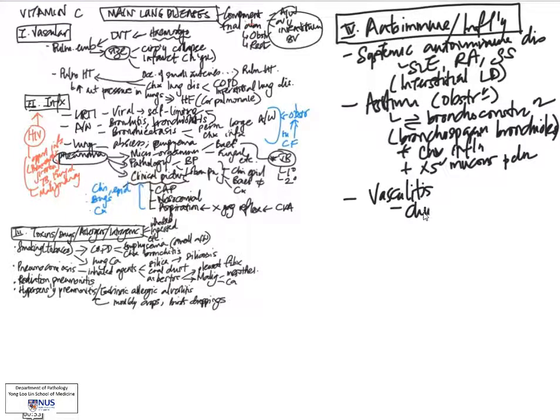Also included here will be vasculitis. If you want, you can also include it under vascular diseases. This often has an inflammatory component, and examples will be Churg-Strauss disease as well as Wegener's granulomatosis. These are conditions in which there is inflammation that causes injury and damage to the blood vessels. In these conditions, there is also involvement of other organ systems, and you can read about these in the textbooks.